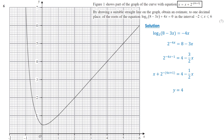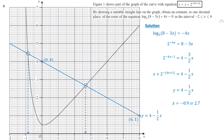We use y equals 4 minus half x to find two points in order to draw a straight line. The y-intercept is 4, so one point is (0, 4). When x is 6, y equals 1, so another point is (6, 1). We can join these two points to draw the straight line y equals 4 minus half x. The root of the equation can be found where the curve and the straight line intersect. By estimating the intersection points on the graph, we find that the values of x are approximately negative 0.9 and 2.7.